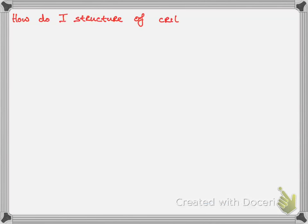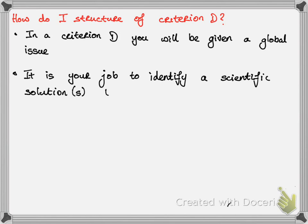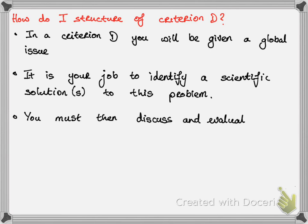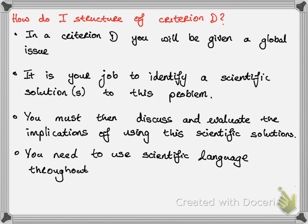Firstly, how do I structure a Criterion D assessment? In a Criterion D, you will be given a global issue or a problem that you will need to solve. It is your job to identify a scientific solution or solutions to this problem. You must then discuss and evaluate the implications of using this scientific solution. You need to use scientific language throughout your assessment or essay and document all resources.